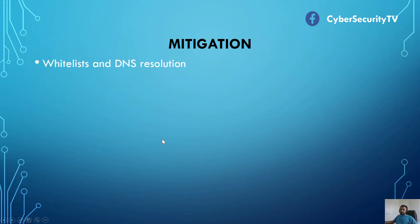Now let's talk about mitigation. First is whitelist and DNS resolution. Rather than following a blacklist approach, you follow the whitelist — only allowing requests from specific IP addresses or DNS names. If a whitelist approach doesn't suit you, you can use a blacklist, but you have to be very careful with that.